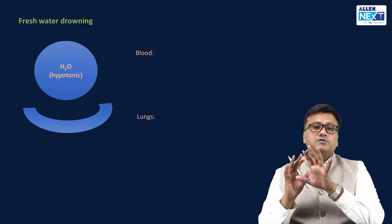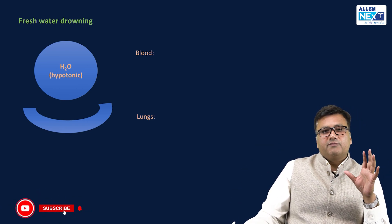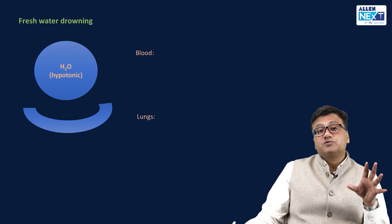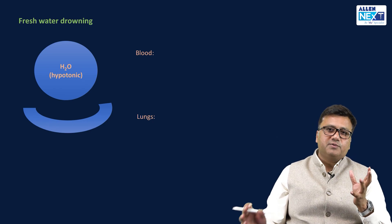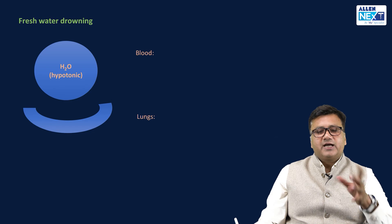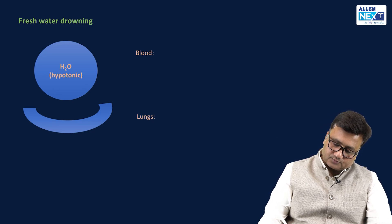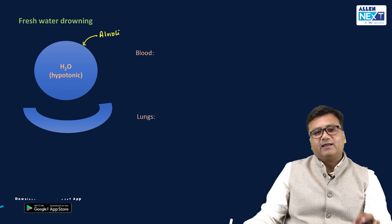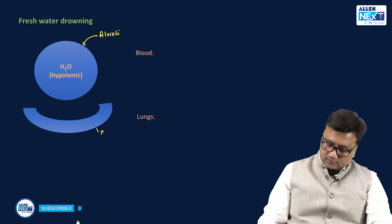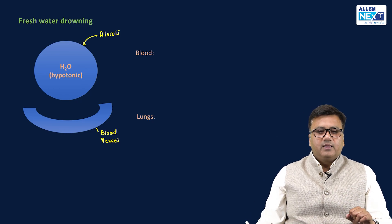Let's now try to see what is the difference between a fresh water or a salt water drowning. Fresh water drowning is something where a person has fallen into a water source which is hypotonic to blood. To understand the whole pathophysiology, let's consider this circle to be an alveolus, and this is a blood vessel around the alveolus — a normal area of blood-gas exchange.